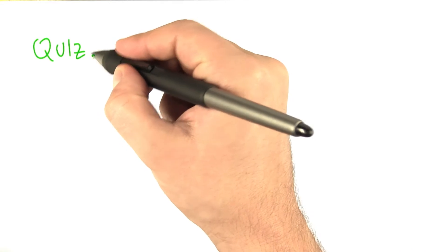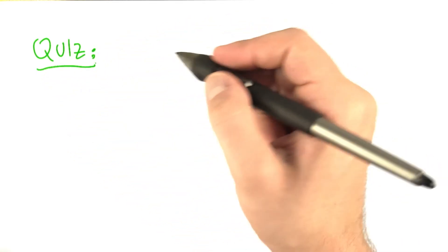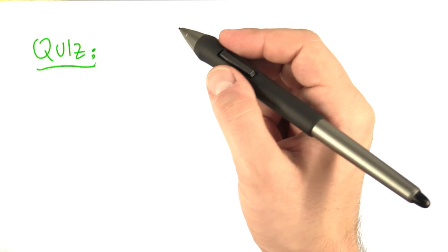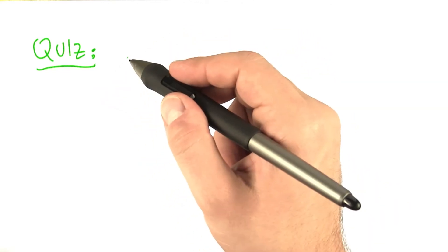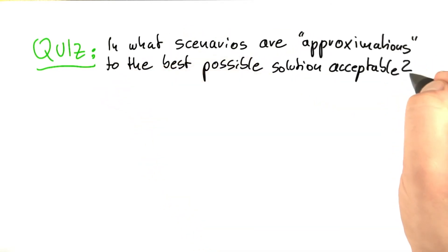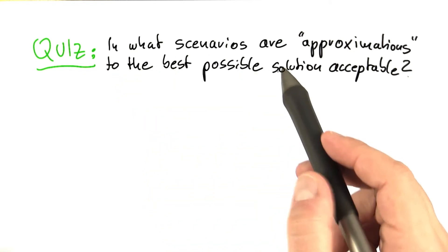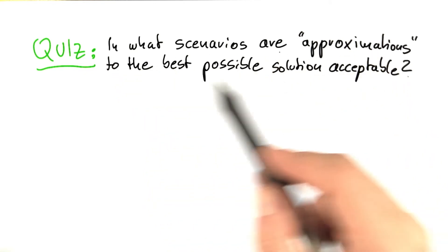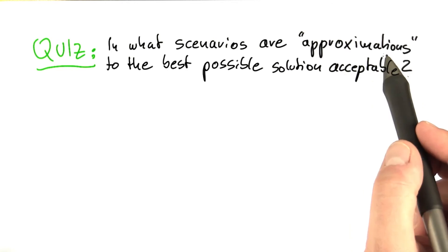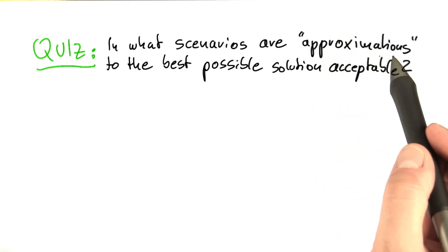Now before we dive into this, I would like you to quickly think about this approach for a bit. In which scenarios might a sloppy or not exact solution be acceptable? So what I would like you to think about is in what scenarios approximations to the best possible solutions would be acceptable. Approximations is the more formal term for sloppiness.